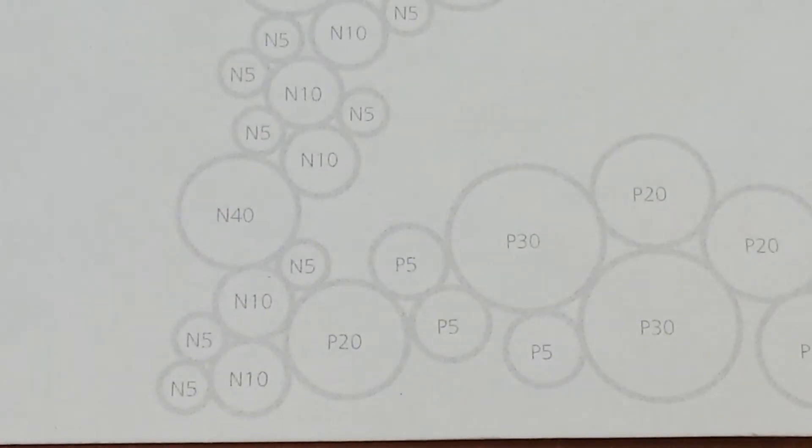So here's how to read your canvas. When you look at it, the letter is for the color. So N is for navy, P is for purple, Y is for yellow, and the number is for the volume that you're going to pipet into that area.